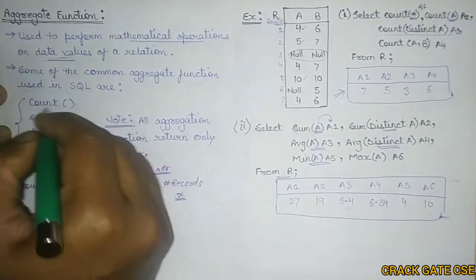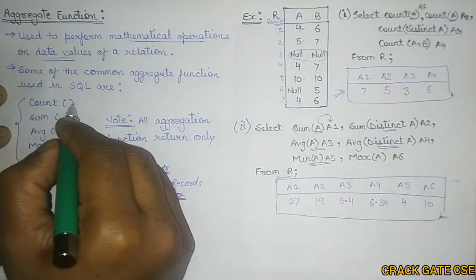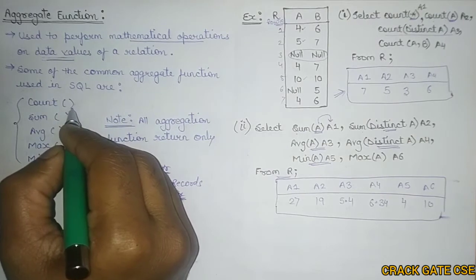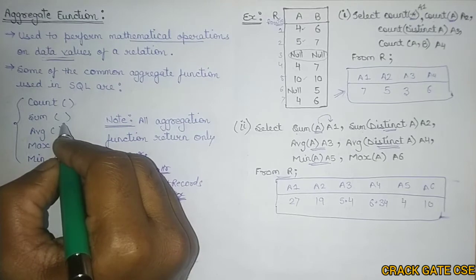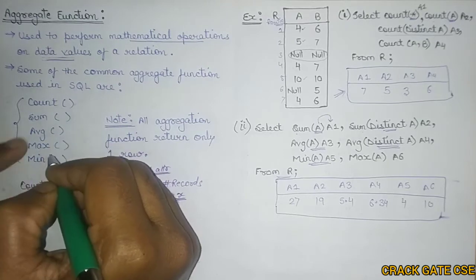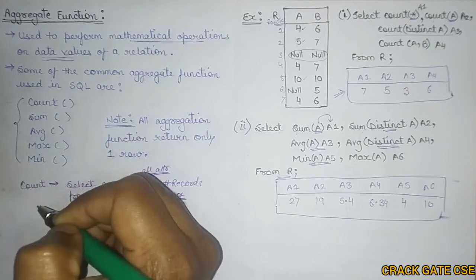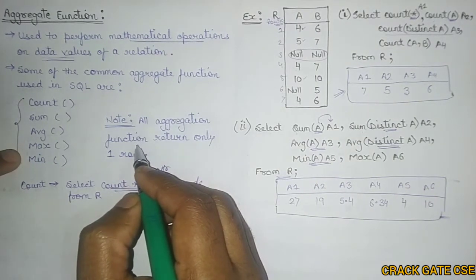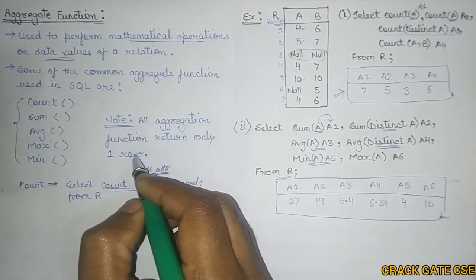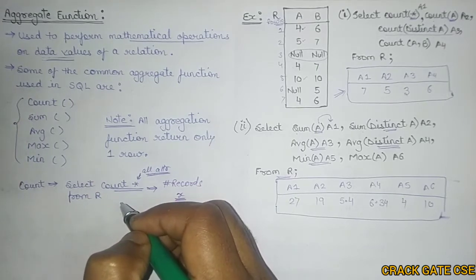Some of the common Aggregate Functions used in SQL are: count, which is used to count the number of rows or values; sum, to sum particular numerical values of a particular attribute; average, to find out the average; max, to find the maximum value; and min, to find the minimum value. One important note is that all these aggregation functions will return only one row, meaning they will give you a single value.